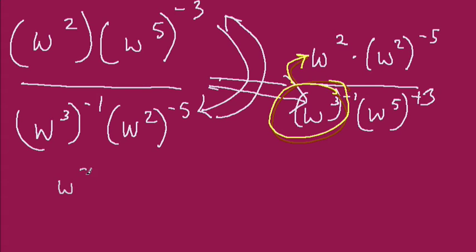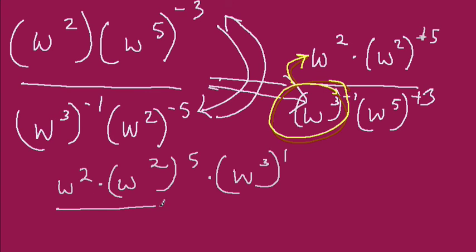So to do that, let's just switch this right now. We have w2 times w, and I'm sorry, this should be positive, because we moved it from down here. We switched it. w2 times w2 to the 5th power times w to the 3rd to the positive 1. All that, so now we move the numerator. And that's over w to the 5th to the 3rd.